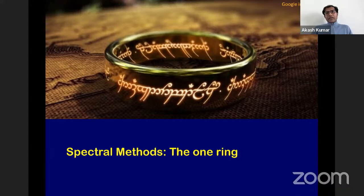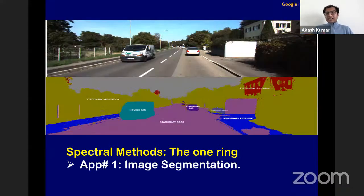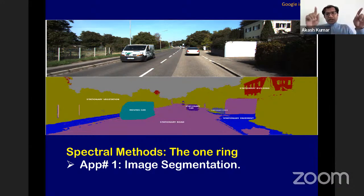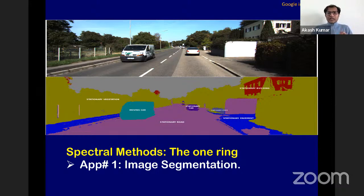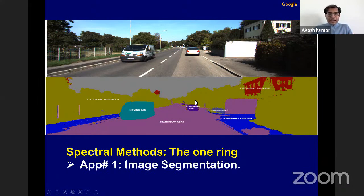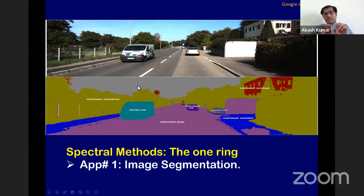For example, for classical tasks such as image segmentation, spectral methods are the go-to weapon of choice. Think of an image as a bunch of pixels where you want to classify adjacent pixels into one coherent object. Spectral methods were successfully able to identify one object as a stationary car, another as a stationary road, and remarkably another as a moving car — they were able to identify these really different objects.